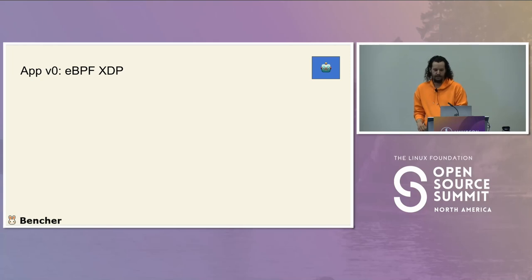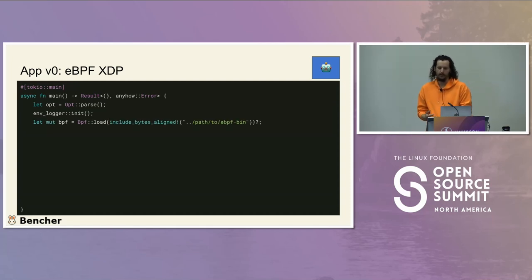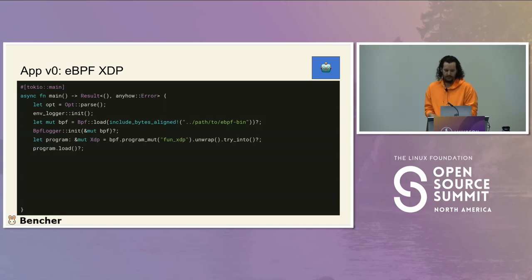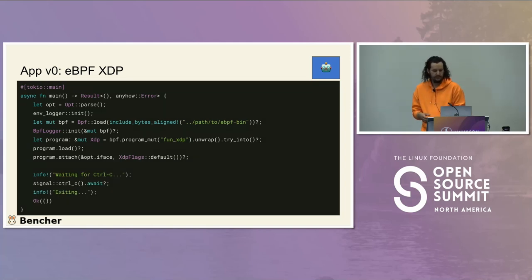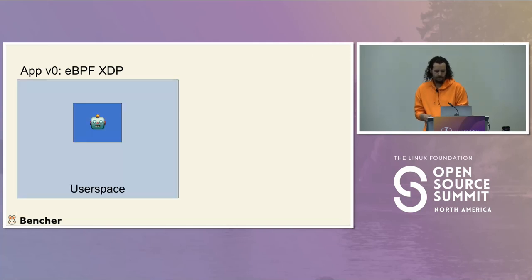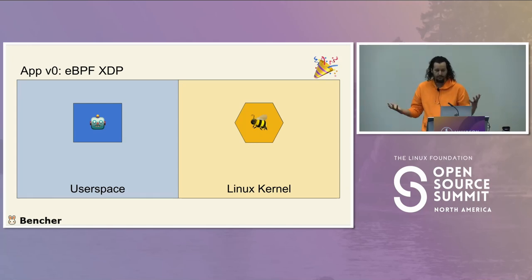Now moving over to user space. In main, we parse the arguments passed to it, initialize logging, get our bytecode for the BPF program, load it into the kernel, and attach it to the interface passed in with default flags. We wait for control-C, then exit the program. That is the user space side — and we're done with version zero, our first application in eBPF.